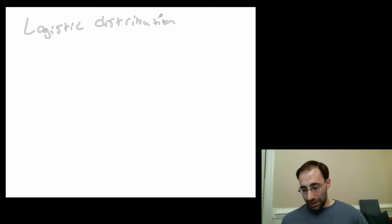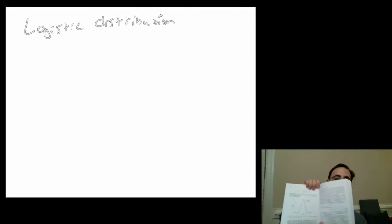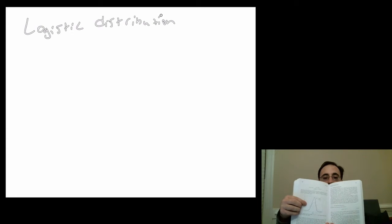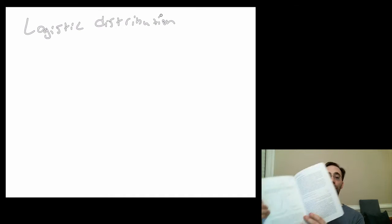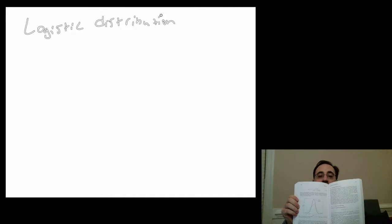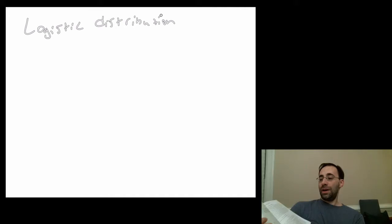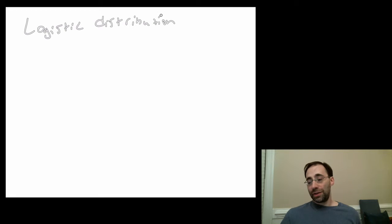And it looks a lot like normal, except it has what's called fatter tails. So here's a picture of the logistic, right here. And the darker line over there is a normal distribution, standard normal, and the dotted line is a logistic distribution. So it's much like a normal, except there's fatter tails.